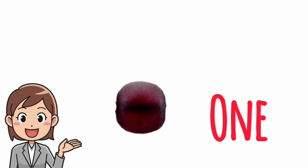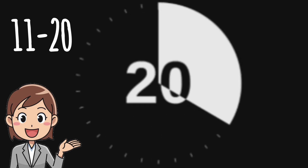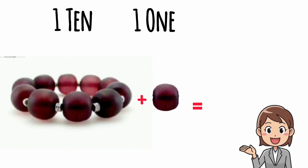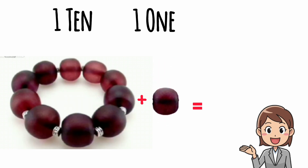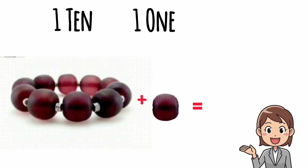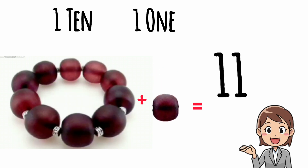Okay students, let us learn numbers 11 to 20. Here I have one bracelet and one bead. One bracelet means one ten, and one bead means one one. So one ten and one one make eleven.